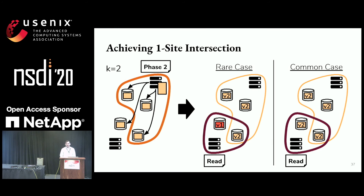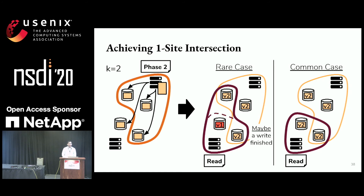In the rare case, we contact the two nearest sites and only have one split, which is not enough to recover the data. This tells us that a write may have completed, so we wait for the larger quorum. In the rare case we fall back on the k-splits intersection; in the common case we have just the one-split intersection and lower latency.